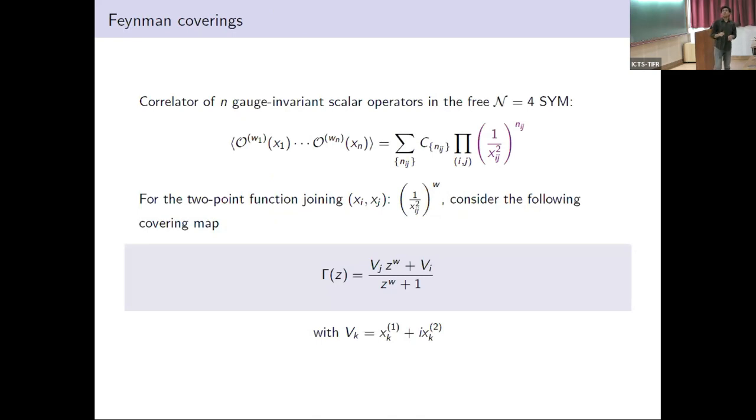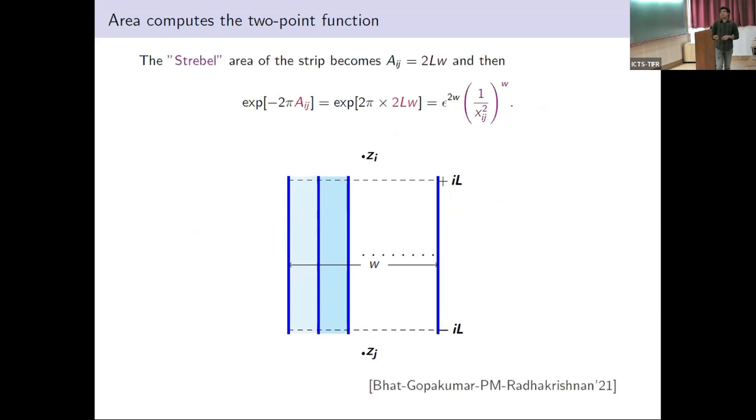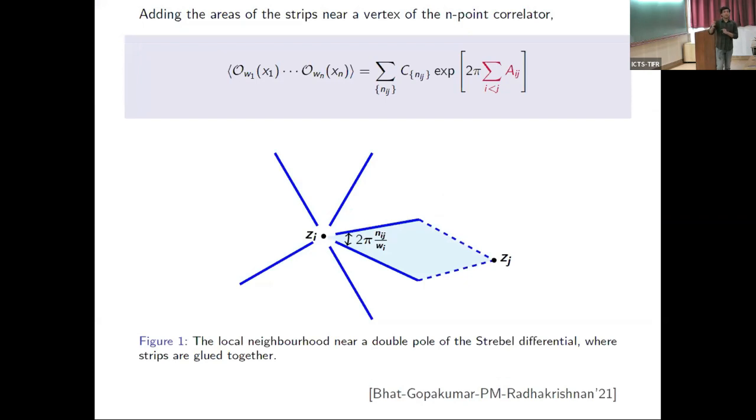In the remaining time, I want to talk about something for 4D gauge theory. Let's consider some scalar operators of a particular Yang-Mills theory. At the tree level, the correlator is given by sum of products of Wick contractions. Take two such points. There are Wick contractions between them. For this particular two-point function, consider this covering map, covering surface. For a two-point function, you can put it on a plane, and the covering surface is also from a 2D surface to the 2D surface. If you compute the Strebel area of this covering surface, this becomes the two-point function. You can add up all these two-point functions, take products, and get the field theory correlators.